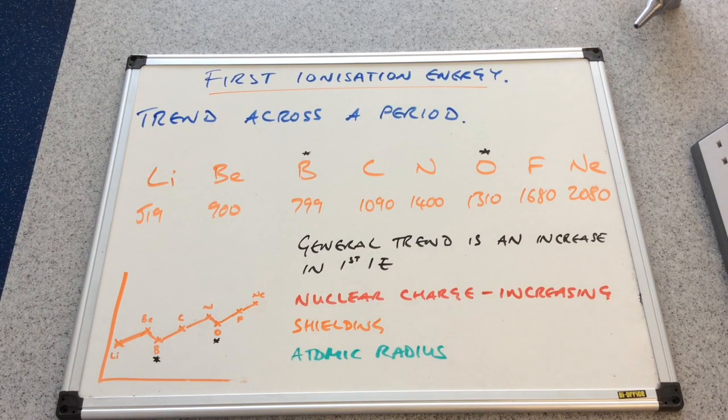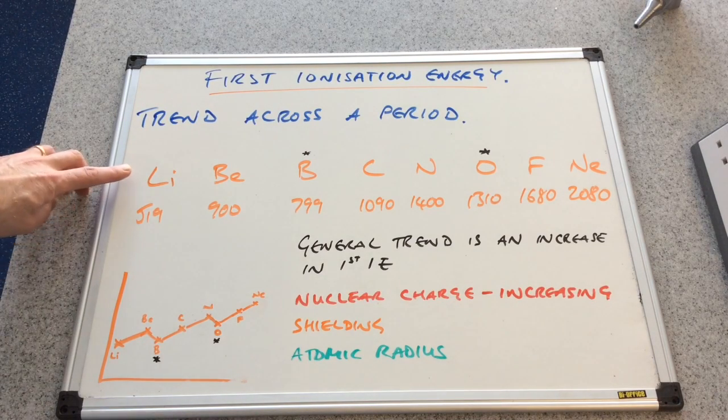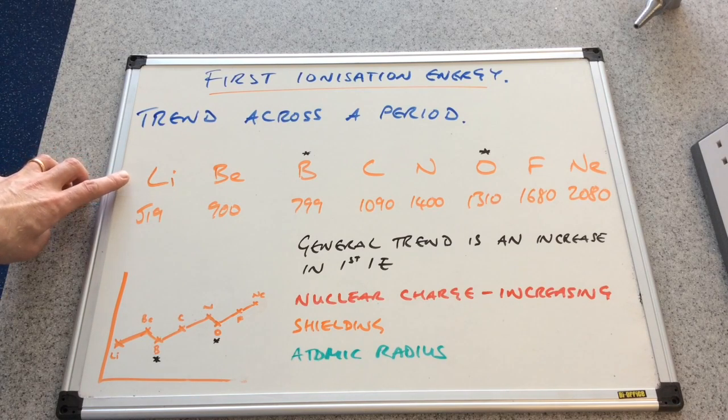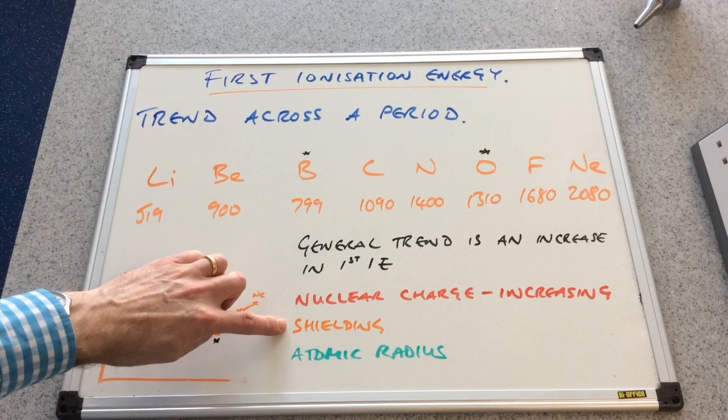The shielding on the other hand, because these are all in the same period, that means they have the same number of shells, so the shielding doesn't change.